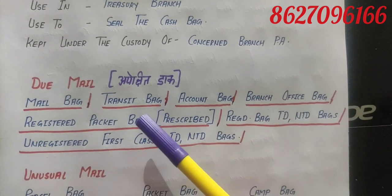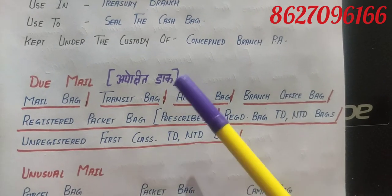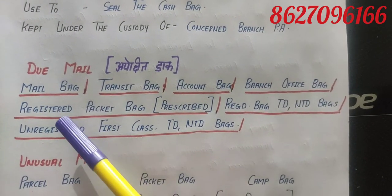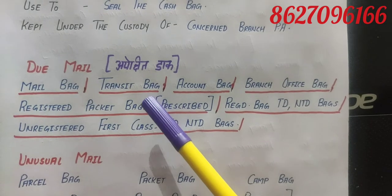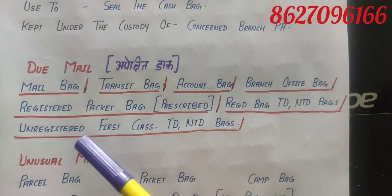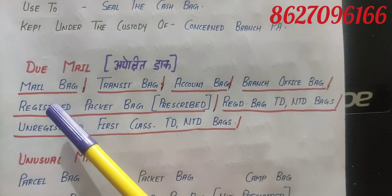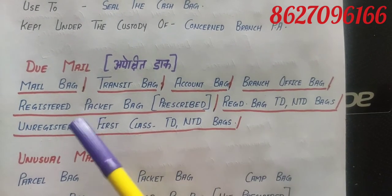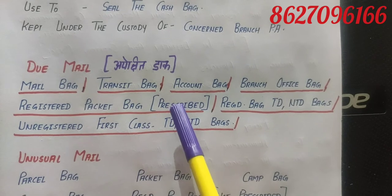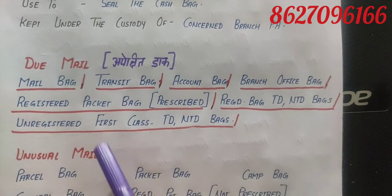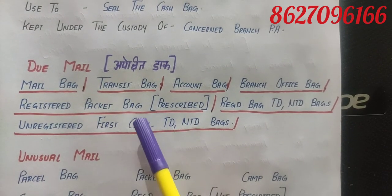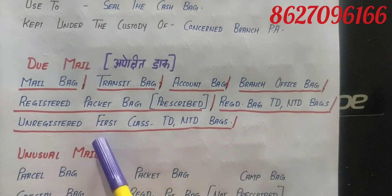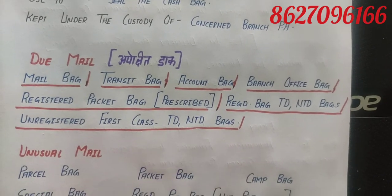Now we have some due mails. We have read these things before but will review them, as many questions are asked on due mails. Due mails include: mail bag, transit bag, account bag, branch office bag, registered packet bag (if prescribed), registered bag, TD and NTD bags, and unregistered first class TD and NTD bags.